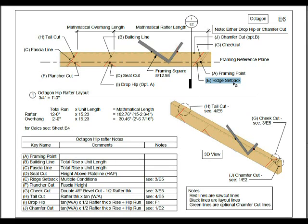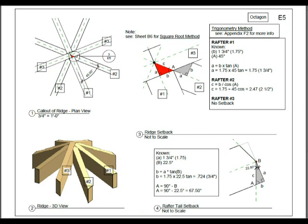Now your ridge setback — there are multiple conditions for this. Let's take a look at sheet E5 and examine this a little bit closer. We've got several different ones: number 1, you can see that in 3D view, and here it is in plan view. This is the area highlighted in red.